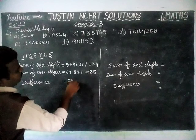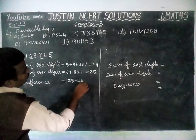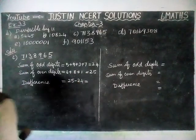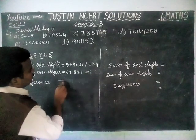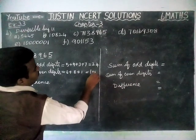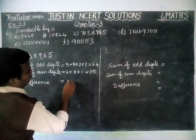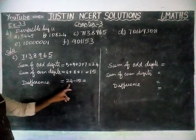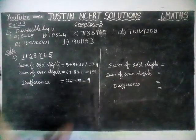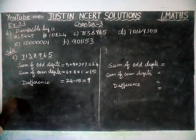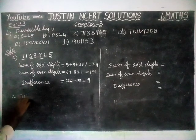Here, the difference is 24 minus 15, which is equal to 9. This 9 is not divisible by 11. Therefore, the given number is not divisible by 11.